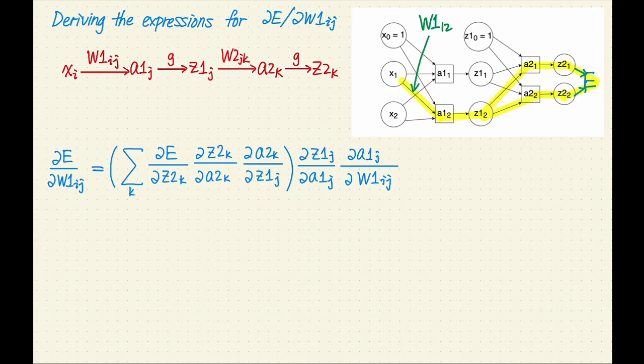Let's keep following the single path from z1. z1 is g of a1, so the next term is partial z1 sub j over partial a1 sub j. a1 is a weighted sum of x using the weights W1, so our final term is partial a1 sub j over partial W1 sub ij. That's the entire expression.